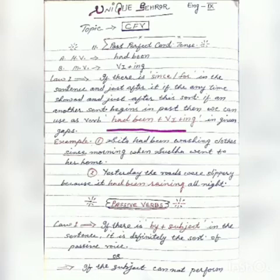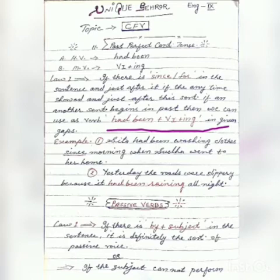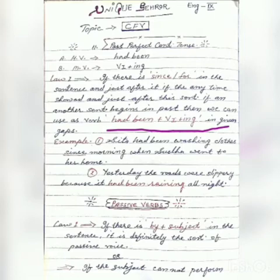For example: 'Sita had been washing clothes since morning when Sudha went to her home.' In the first sentence, we can see 'since' plus time, and in the other sentence, it is in past tense, so we use 'had been' like this.